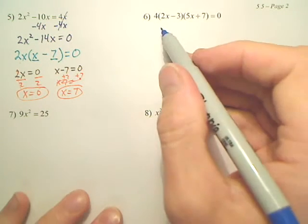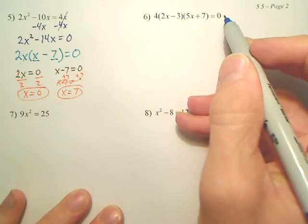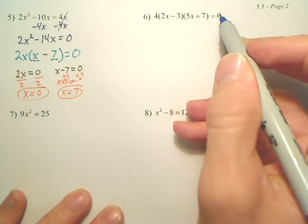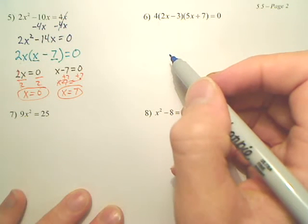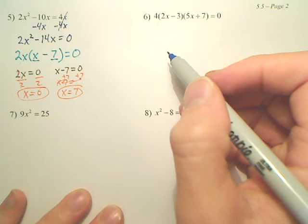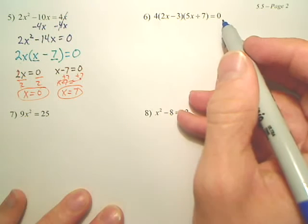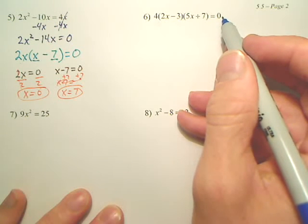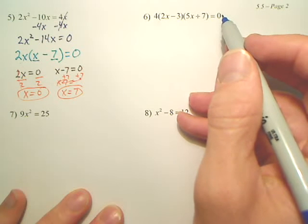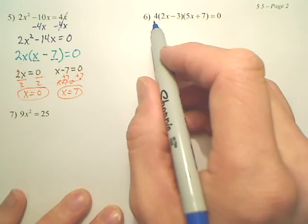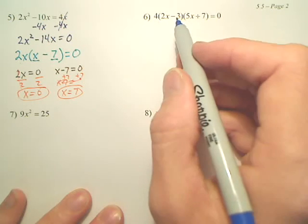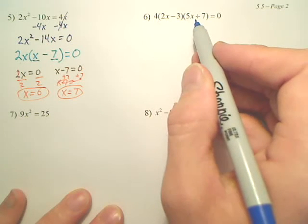Look at number 6. It's all factored for you. It's ready to go. So what are we basically going to do? Solve it. Now, can you set the 4 equal to zero? What do you get when you set 4 equal to zero? That doesn't really make any sense, does it? So do I really have to set 4 equal to zero? No. You basically are going to set both these pieces equal to zero.